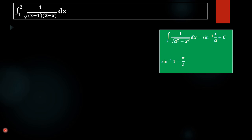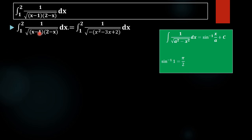Let us expand the denominator: (x minus 1)(2 minus x). We will get negative of (x squared minus 3x plus 2). Here is how: x times x gives minus x squared; taking the negative outside gives positive x squared. x times 2 is 2x, and minus 1 times minus x is plus x, giving 3x; with negative outside we get minus 3x. Minus 1 times 2 is minus 2; with negative outside we get plus 2. So we get x squared minus 3x plus 2.